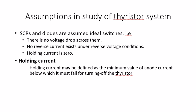Now we are going to see some explanations on the assumptions in the study of this thyristor system. SCR systems and diodes are assumed as ideal switches — as I mentioned before the thyristor. There is no voltage drop across them, no reverse current exists, and holding current is zero. Holding current may be defined as the minimum value of anode current below which the thyristor may turn off.